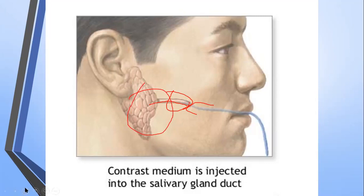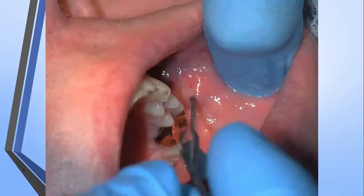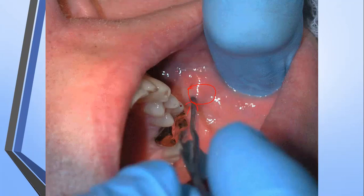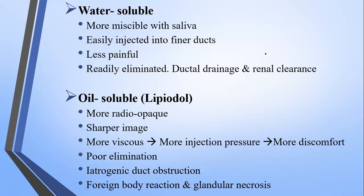In a clinical picture opposite the maxillary first molar on the buccal mucosa, the Stenson duct of the parotid gland is visible, and you can inject the contrast medium into it followed by radiography. If the contrast medium is water-soluble, it will be more miscible with saliva, easily injected into finer ducts, less painful, and readily eliminated via ductal drainage and renal clearance.